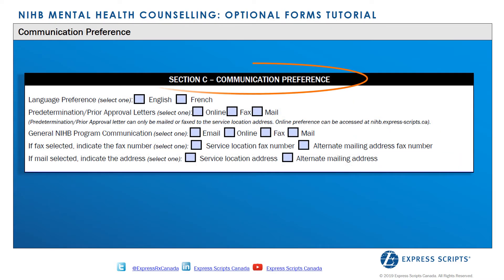In Section C, providers may indicate how they wish to receive program communications, which includes newsletters, prior approval letters, and alerts. If the provider selects email as their primary method of communication, all communications will be sent directly to their email. However, any communication items that contain personal information or personal health information, such as prior approval letters and claim return letters, will be sent via fax or email to the provider's service location.